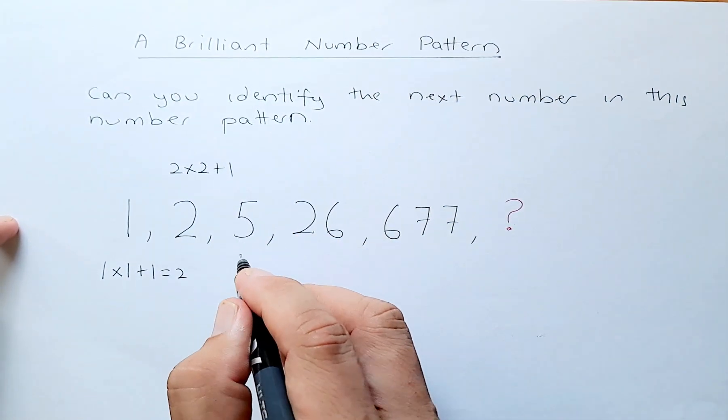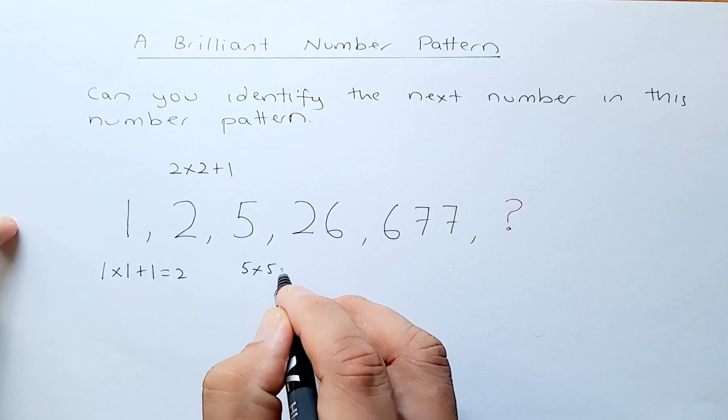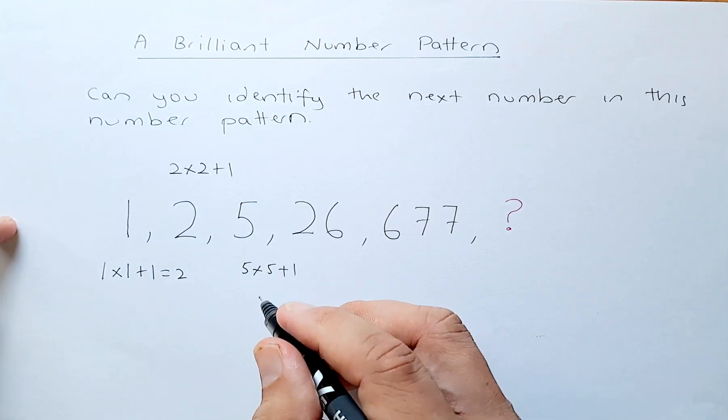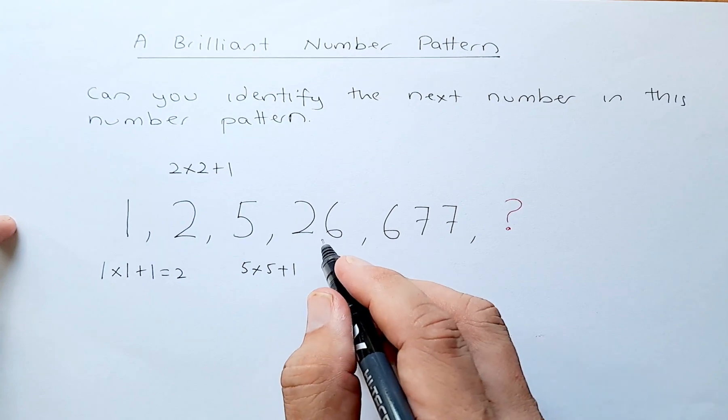So now we are at 5. 5 times 5 plus 1. So 5 times 5 is 25, plus 1 will give you 26. So we are now here.